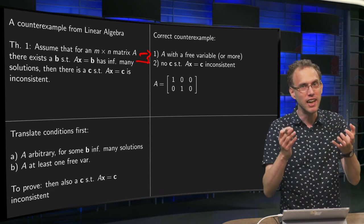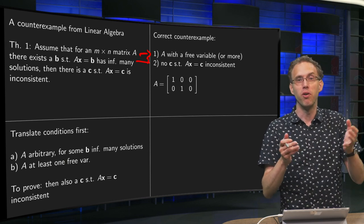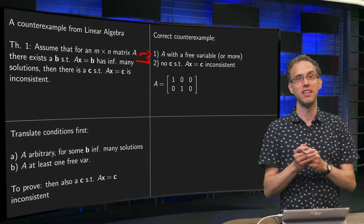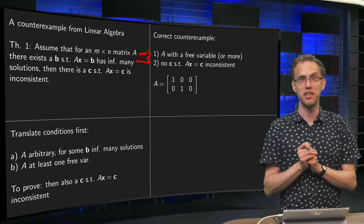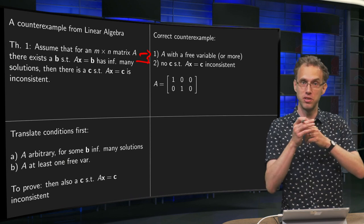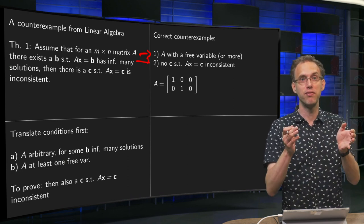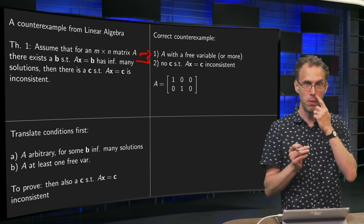Well, if you have done this translation step, which may be a bit more of linguistics, then finding the counterexample is relatively easy. You need an A with free variables, but Ax = C may never become inconsistent. So you need an A with free variables and a pivot in every row.